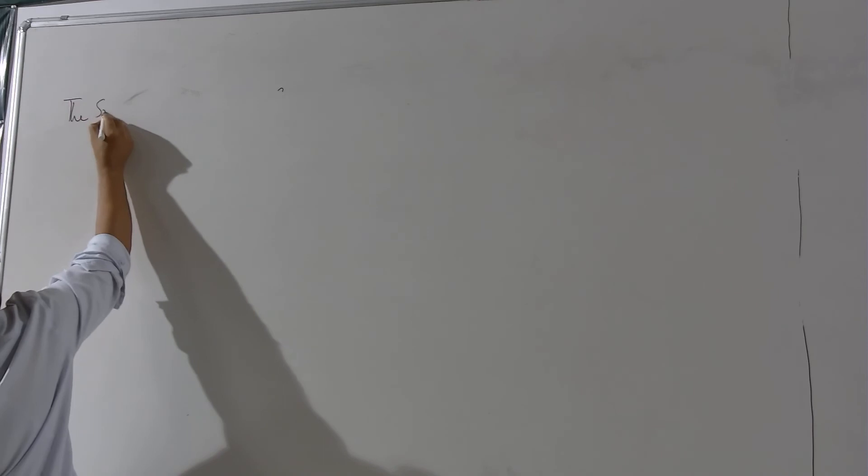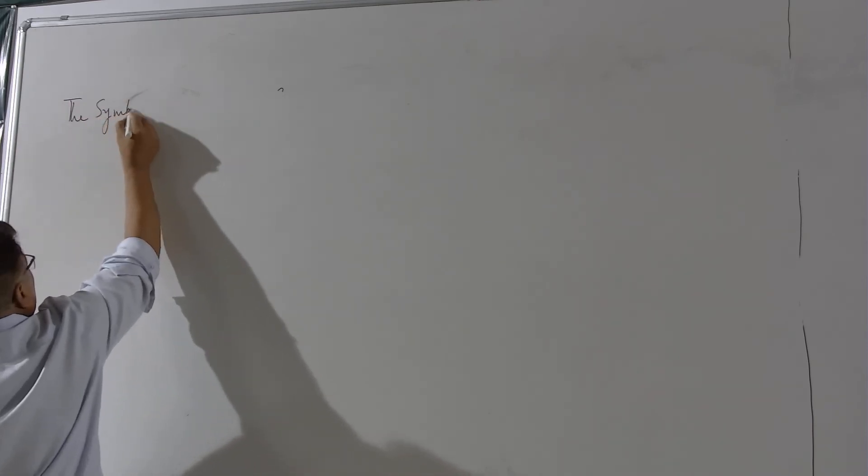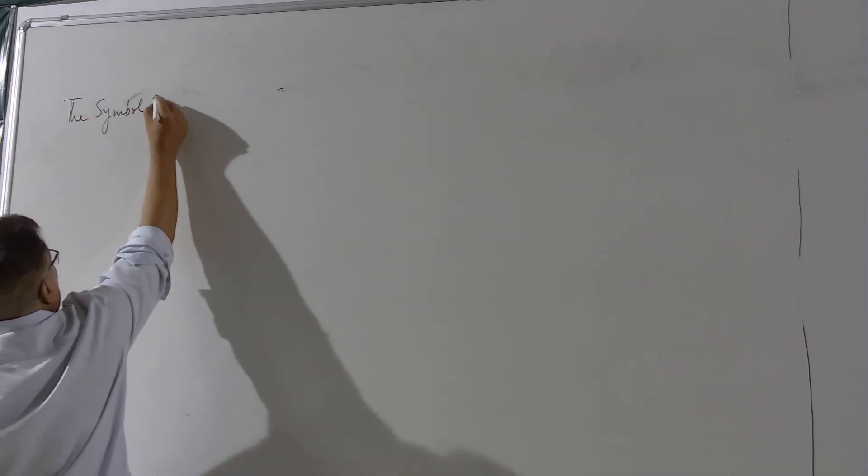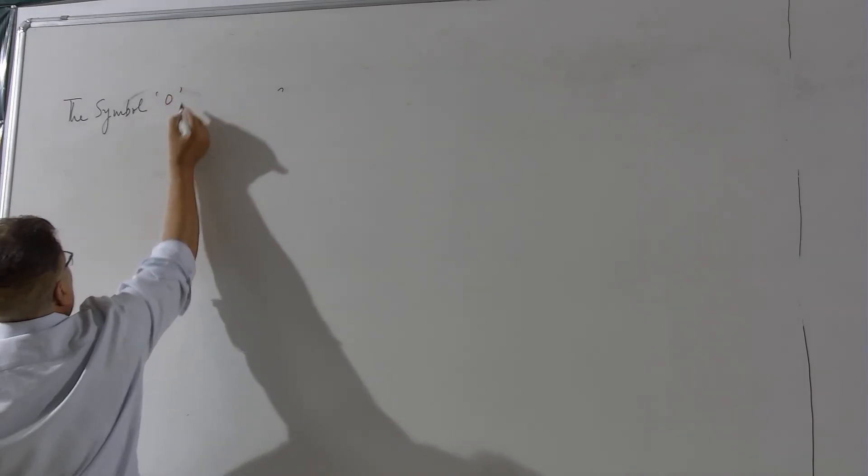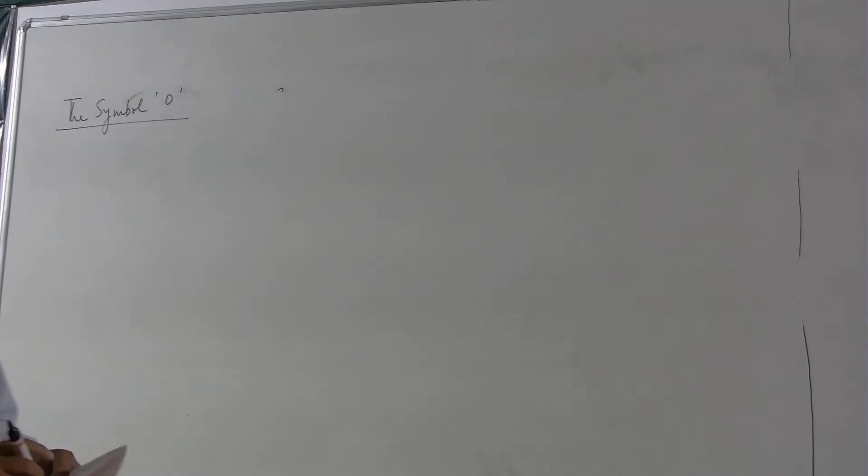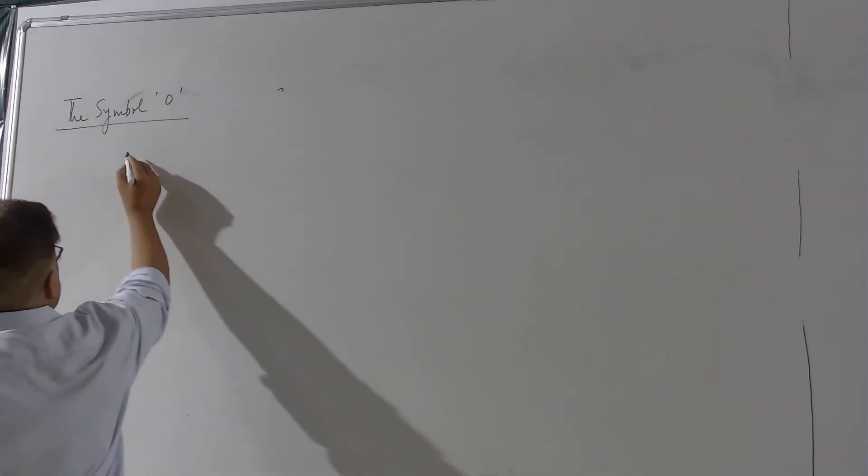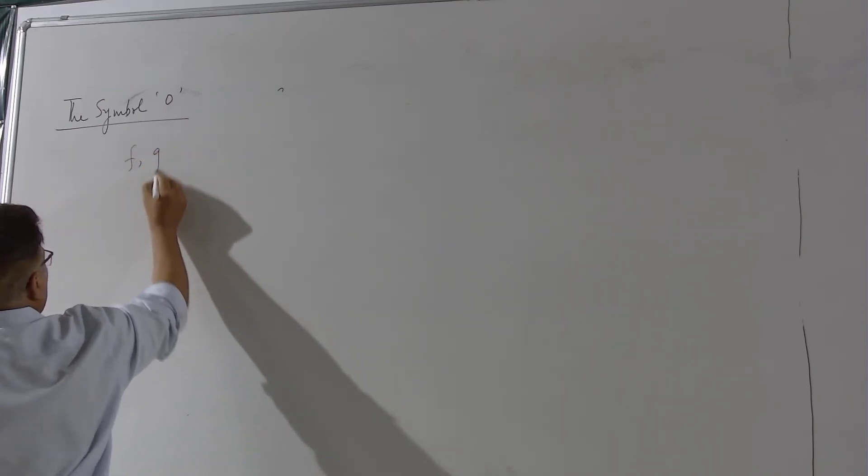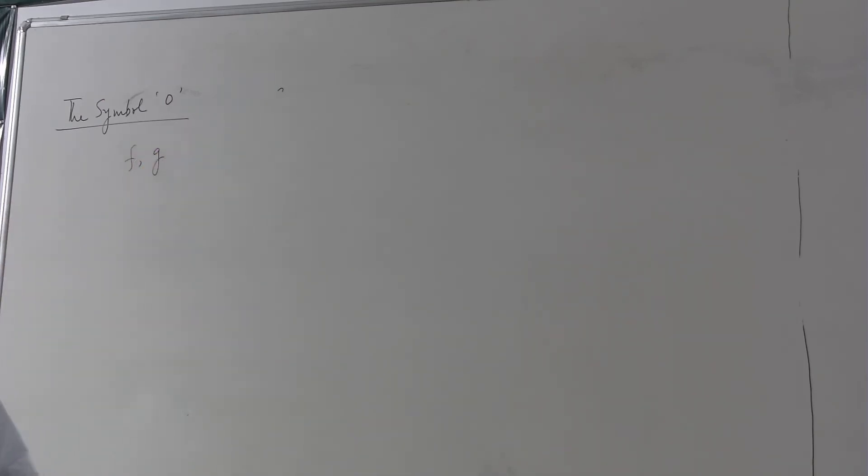The symbol o. There is a symbol of capital O also, but I am more concerned with this small o. Look here, I give you a situation. For example, I have two functions f and g real valued or complex valued.